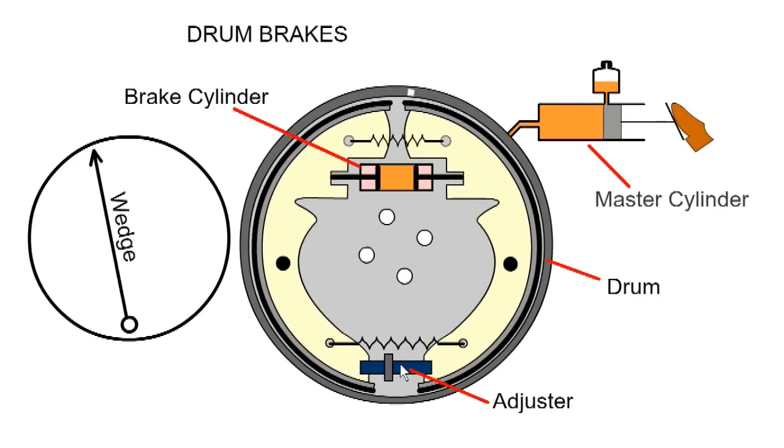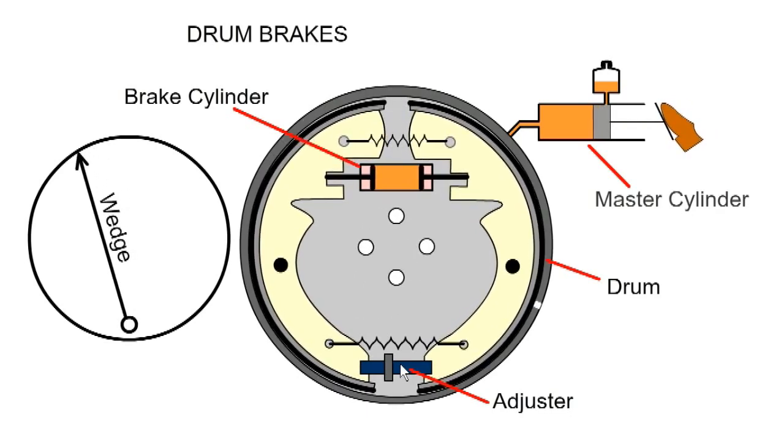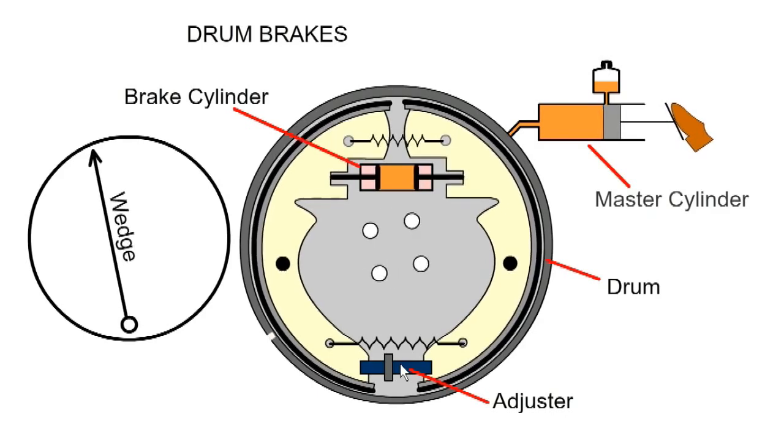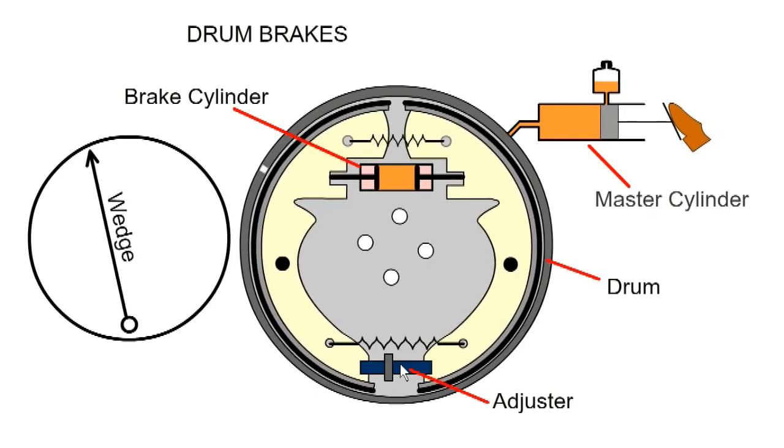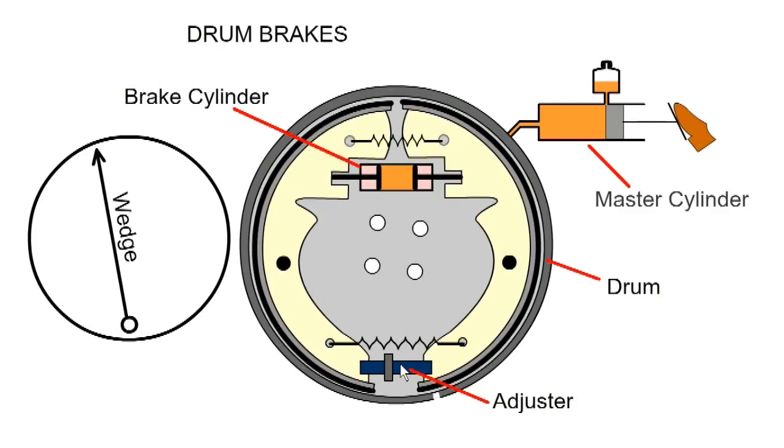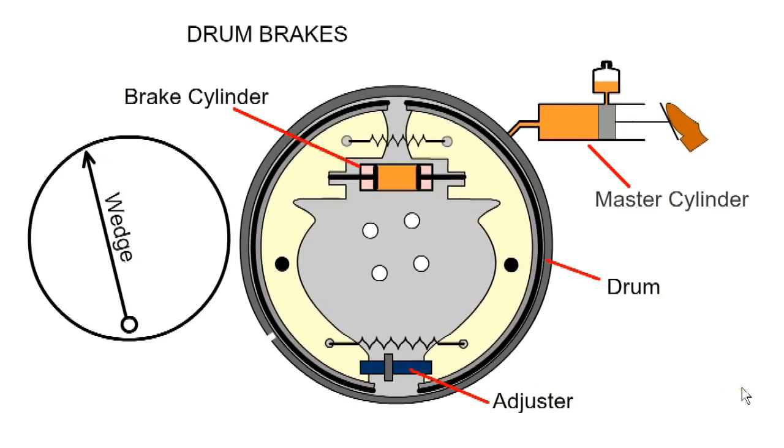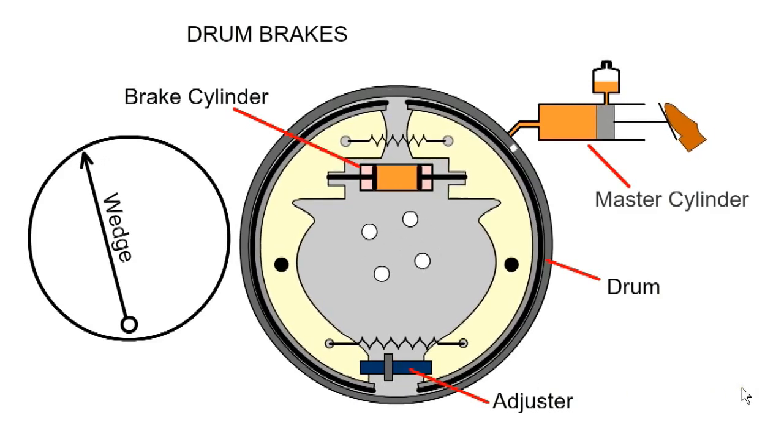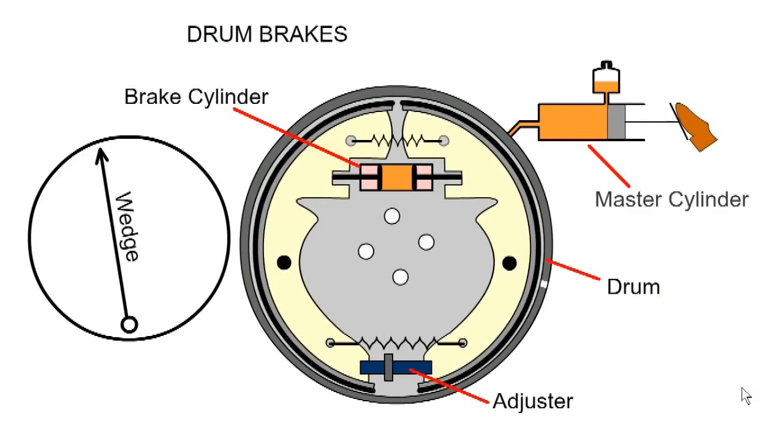The handbrake or emergency brake is independent of the hydraulic system and usually cable operated. Drum brakes are more difficult to inspect, service and cool. Under heavy braking, the brakes will heat and become less effective. This is called brake fade.